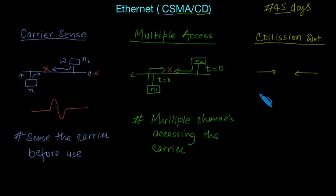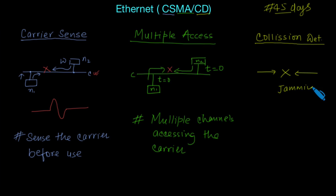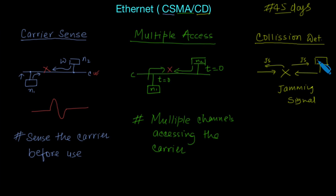In case of collision, both nodes N1 and N2 using the carrier have to be notified that a collision has occurred and they need to stop transmission. For this, a jamming signal is produced. The jamming signal is sent to both nodes, so they come to know that collision has occurred and stop their transmission.